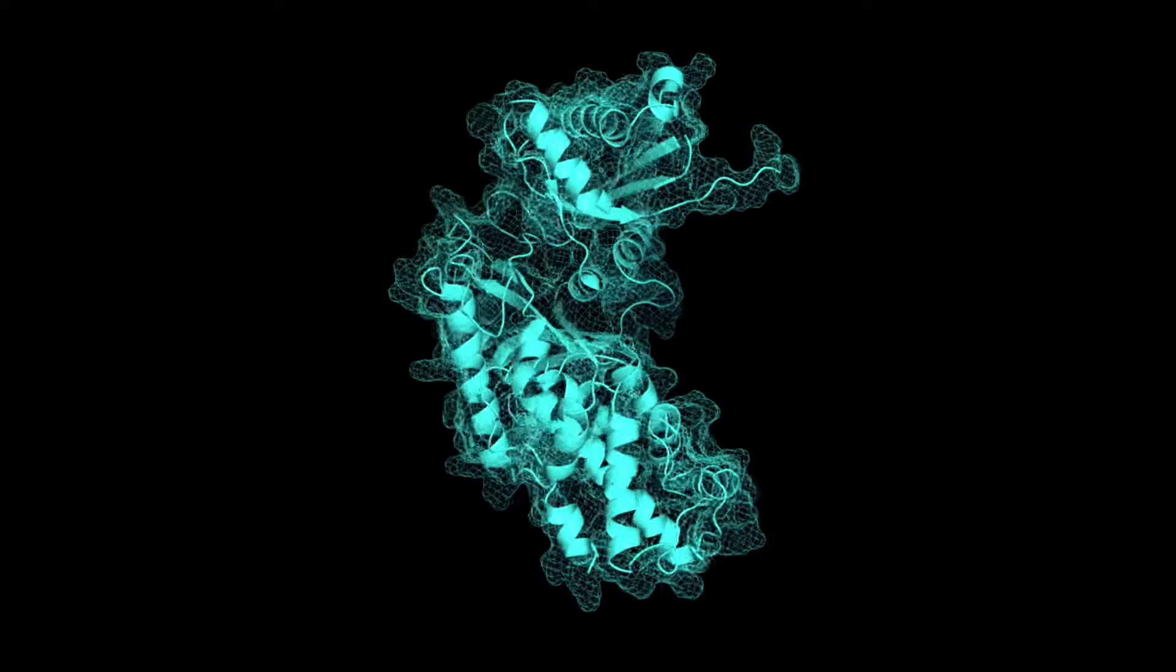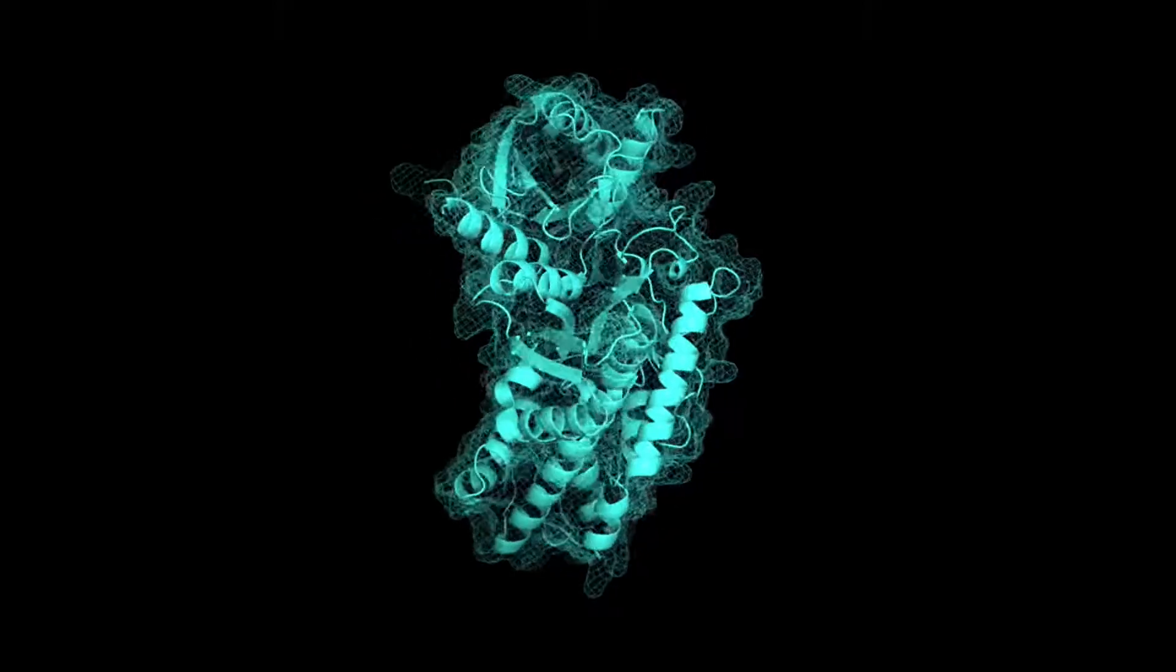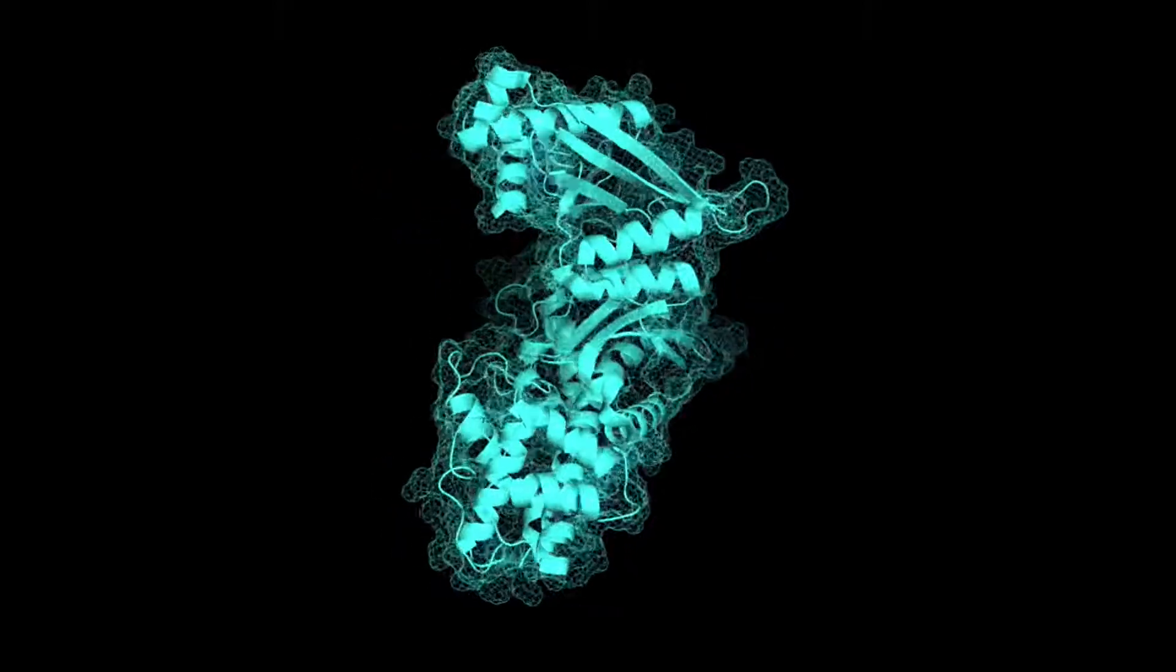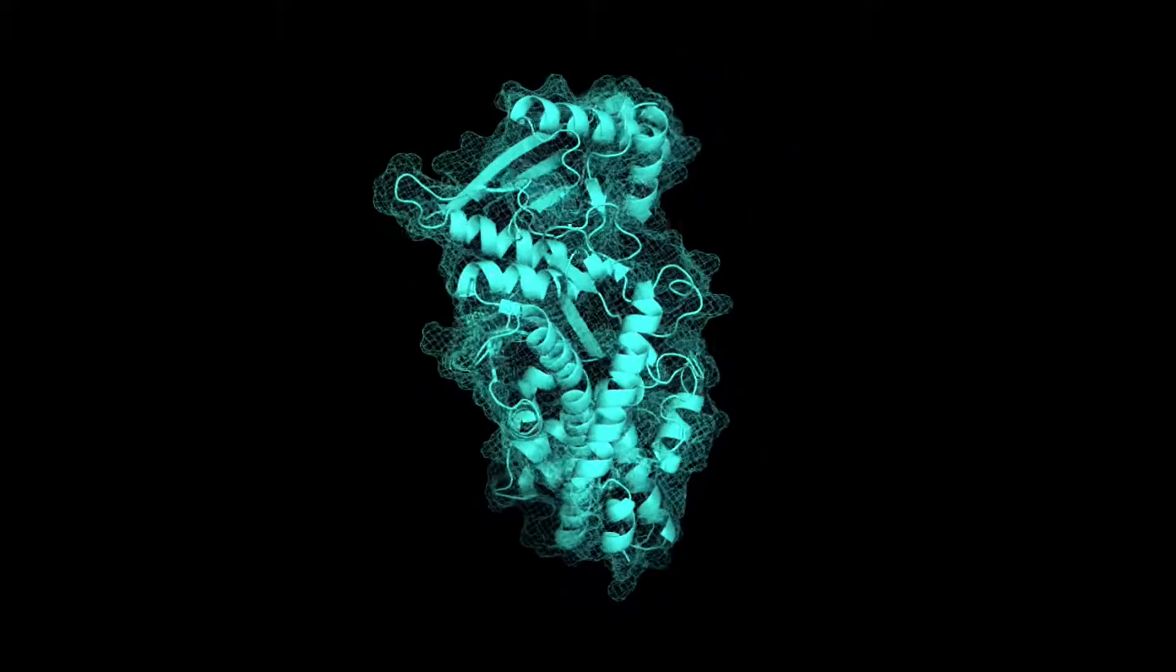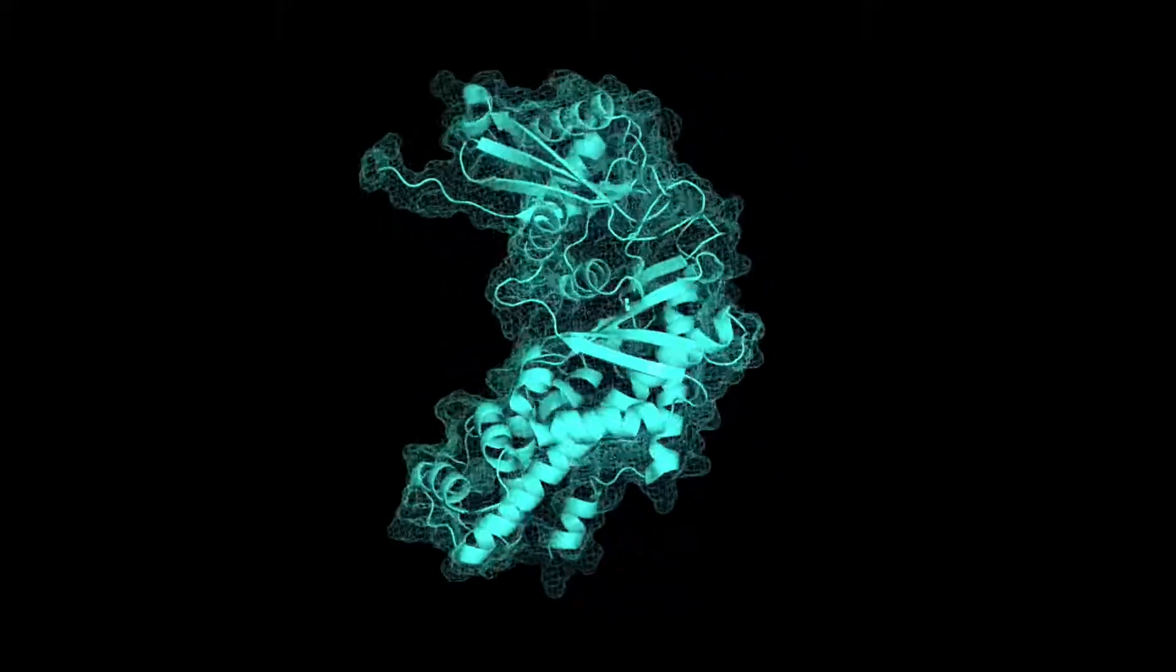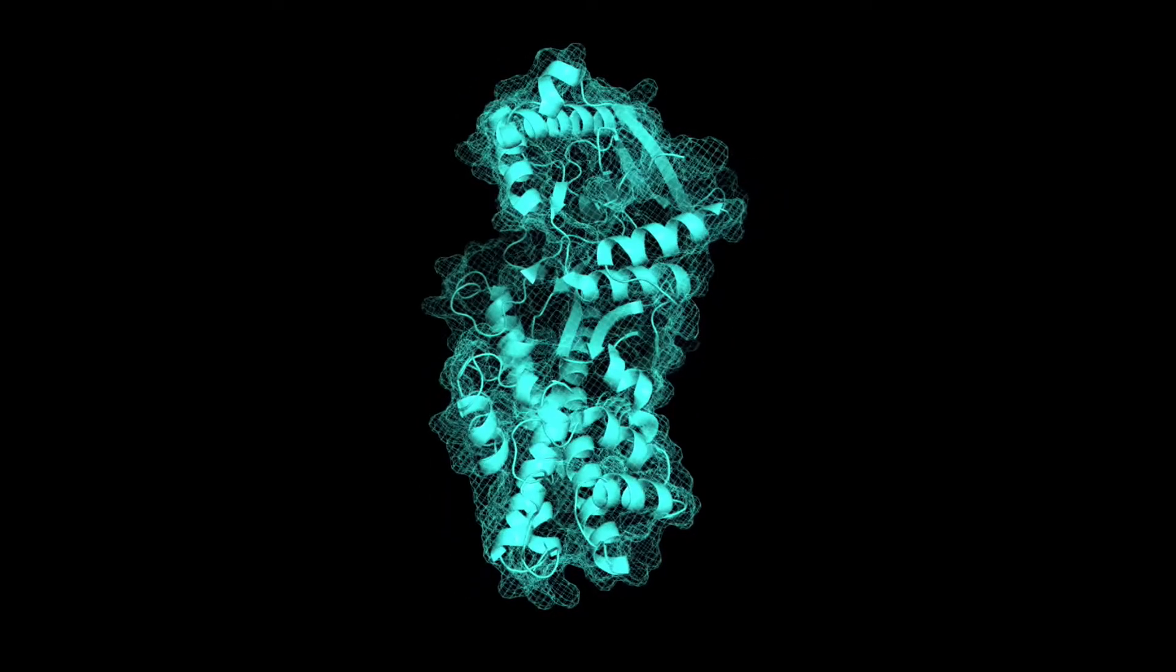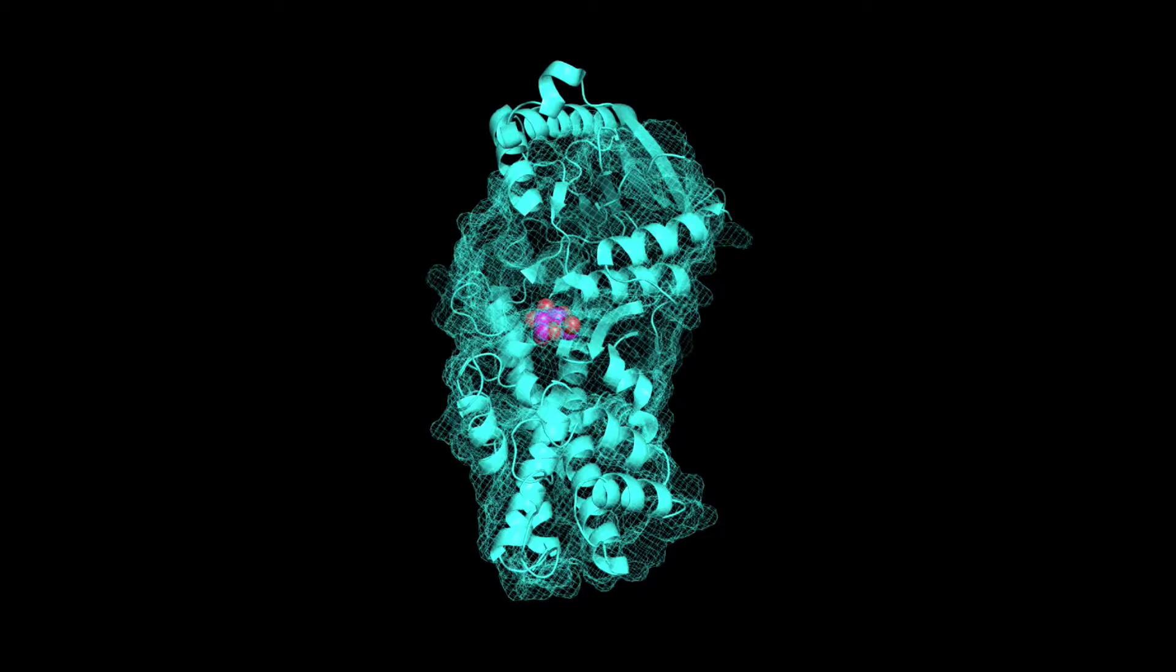This form is predominantly found in the liver, and when glucose levels are high, it facilitates storage of glucose as long chains of glycogen for later use. When the enzyme is unbound, it exists in this open form, but once a molecule of glucose binds, the enzyme clamps shut around it.